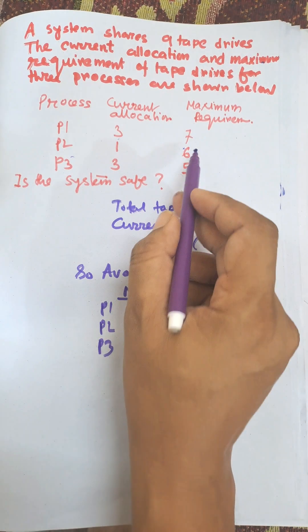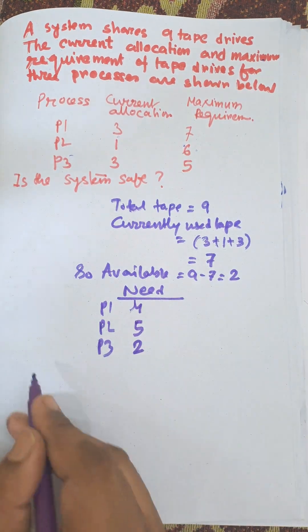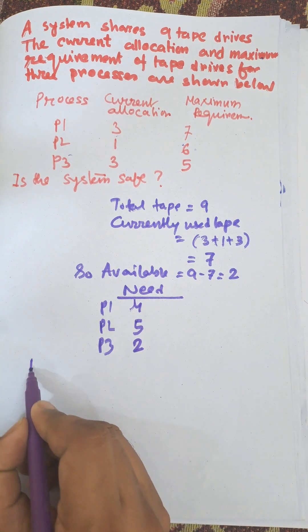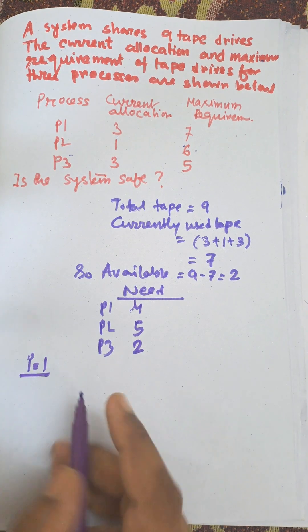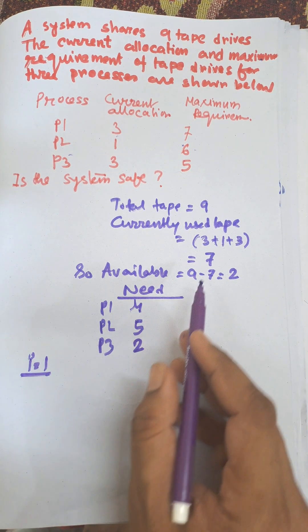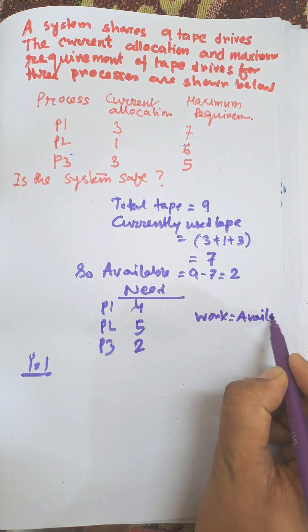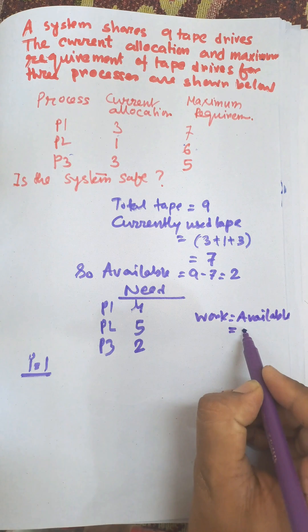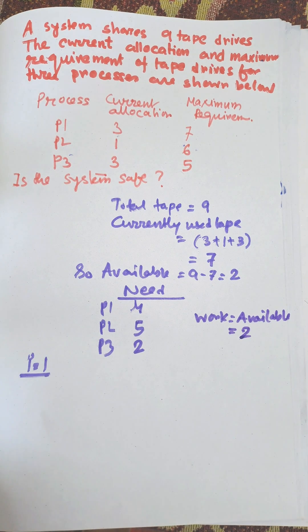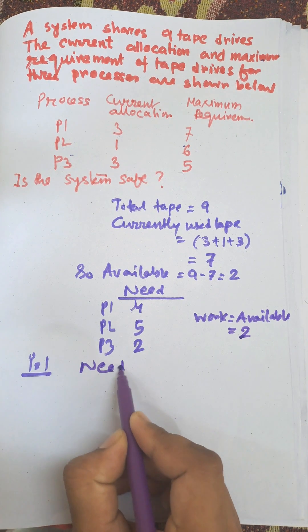Now we need to check every process. For i equals one, we need to check need less than or equal to work. Work equals available, which is the variable used to store the current available value. We need to check need less than or equal to available.